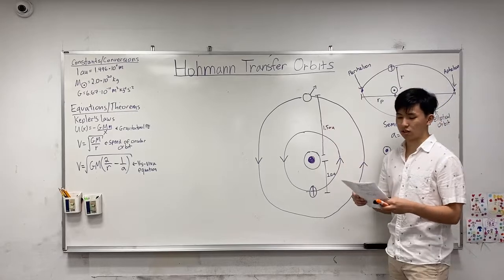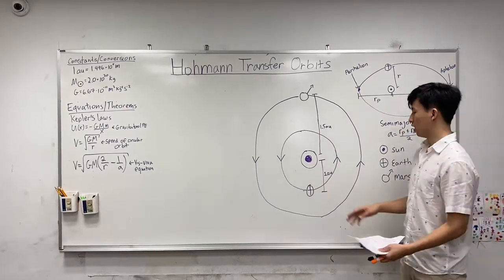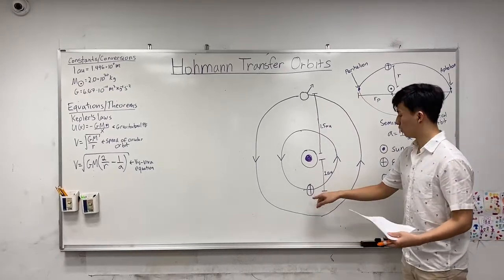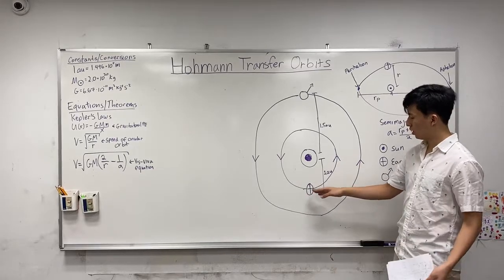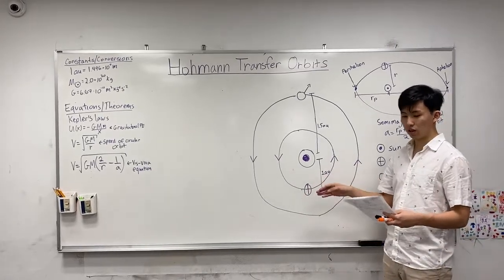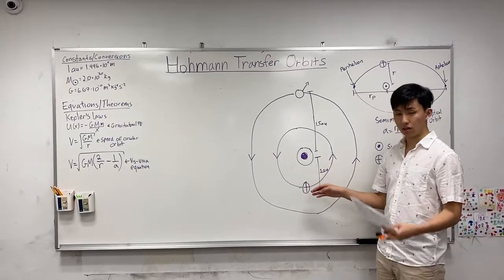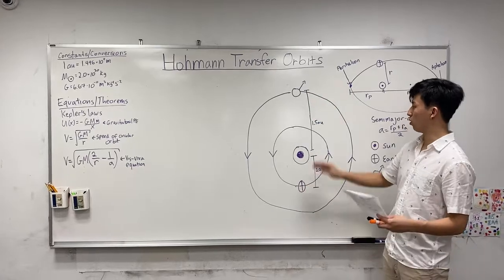What makes the Hohmann transfer orbit special is that it's just one forced acceleration and it's the most efficient way to move between orbits.